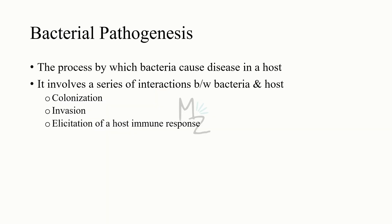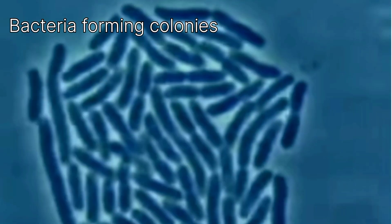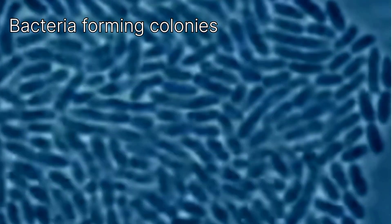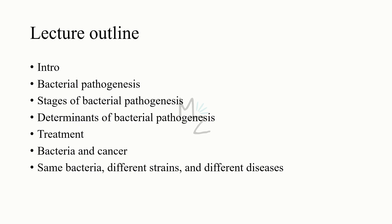Bacterial pathogenesis is a process by which bacteria cause disease in a host. The host can be a human, animal, or bird, but here we are concerned with humans. It involves a series of interactions between bacteria and the host. After getting entry into the host, bacteria will start to form colonies — this process is called colonization. Then it will start invasion, and after that it will elicit a host immune response.